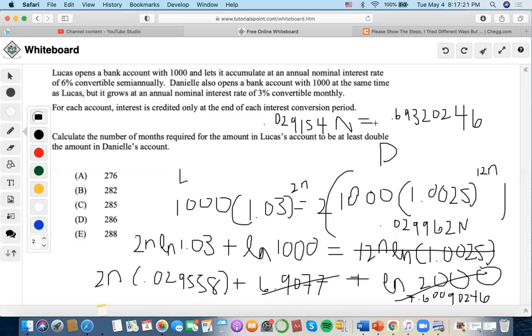Now we're going to find n. 0.6932. We'll divide both. It's going to be 23.77, and n is 23.77. But they're asking for how many months. So in this case we'll do 24 times 12 months, and we'll end up getting 288 as the answer.